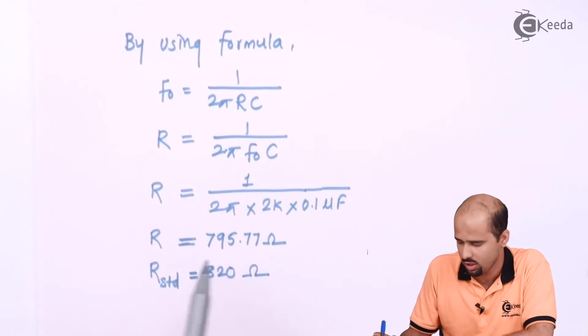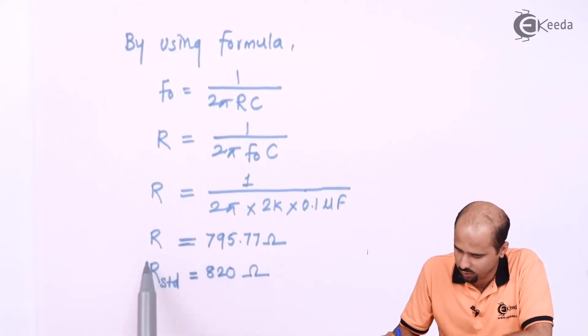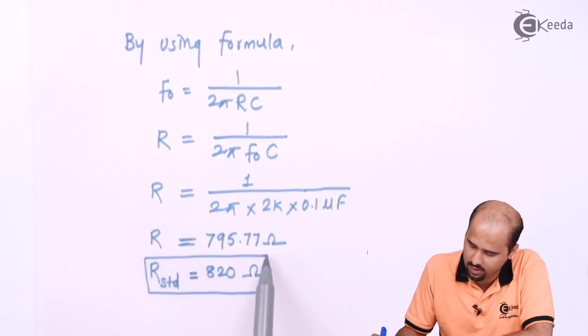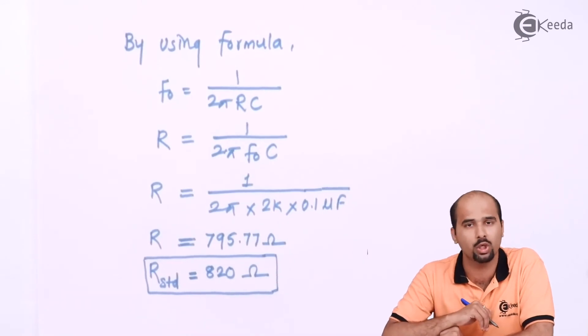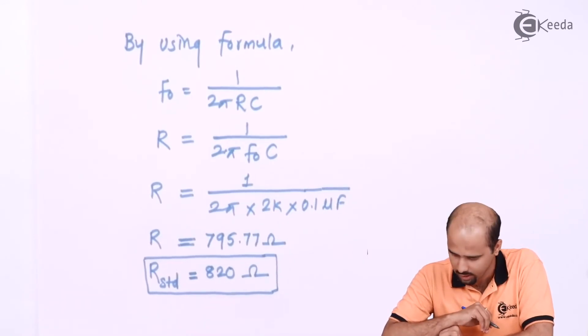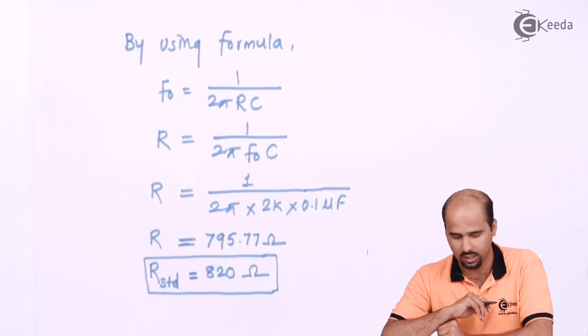Okay, so we'll be having the resistance of 820 ohm as a standard resistance and we can say that here we'll be getting near about the 2 kilohertz frequency. This is all about the resistance part.